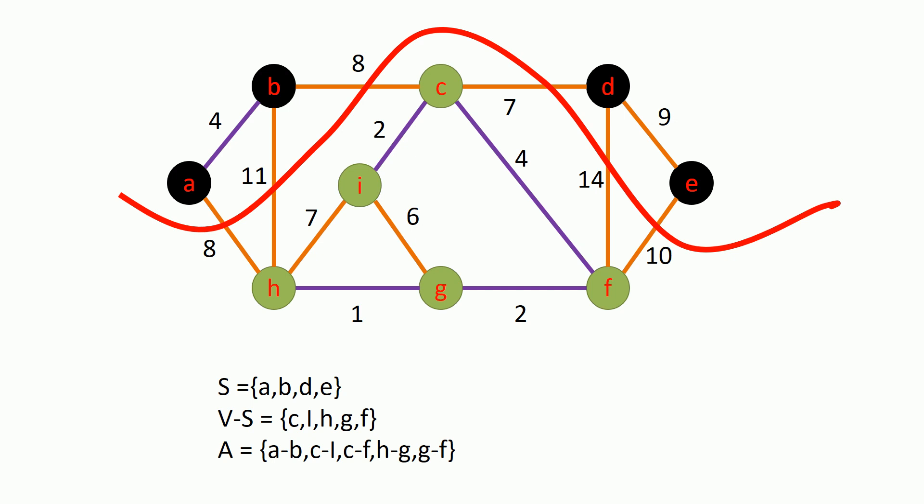For this graph, set S contains all the black colored vertices — vertices A, B, D, E. Set V minus S contains all other vertices not included in S, which means vertices C, I, H, G, F. Now you can see that for some edges, the residing vertices are in different sets. If you consider the edge between B and C, B is in set S and C is in set V minus S. We call such an edge one that crosses the cut.